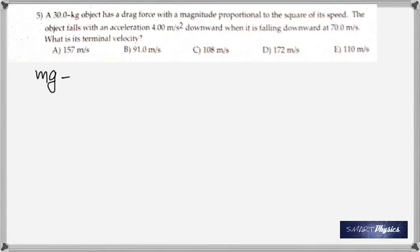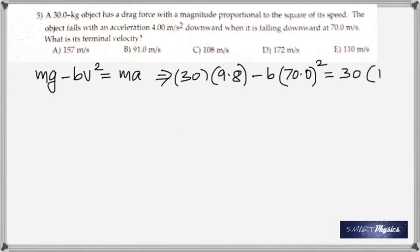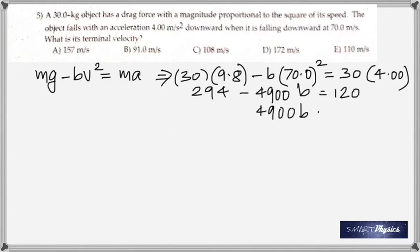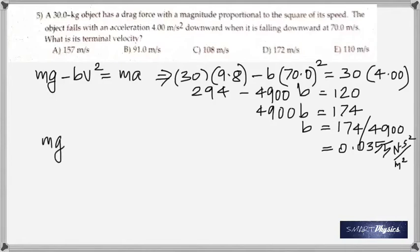So now fifth one. I did this in class already. So the drag force is proportional to the square of its speed. And the object falls with an acceleration of 4 m per second squared downward when it is falling at 70 m per second. What is its terminal velocity? Now the net force can be found out by looking at its weight acting down minus the drag force acting up. So the weight minus drag force is the net force should be equal to mass times acceleration. Now rearrange that and find the constant B. All these terms are given. And 174 by 4900 which gives 0.035 newton meter squared second squared. That's just looking at the units.